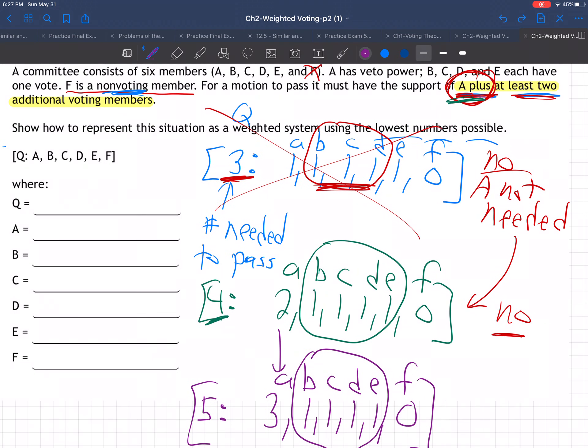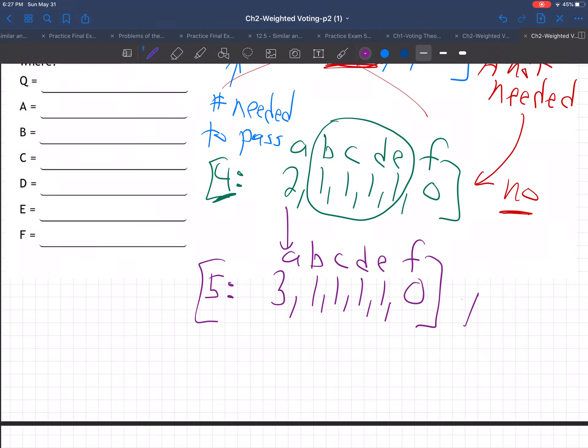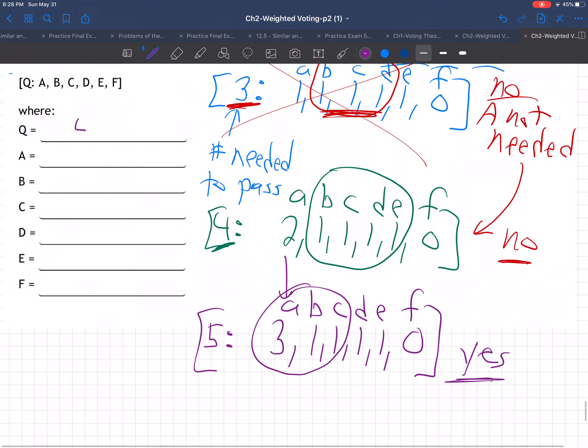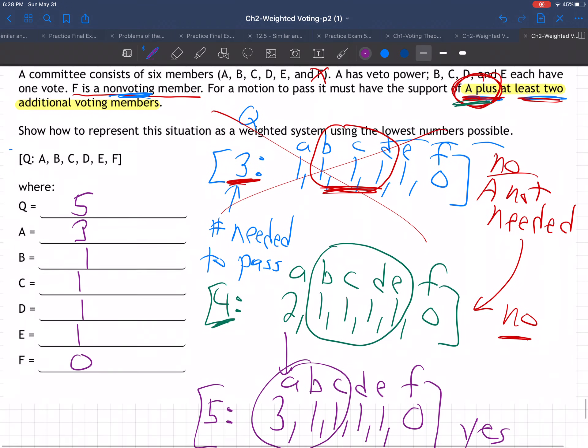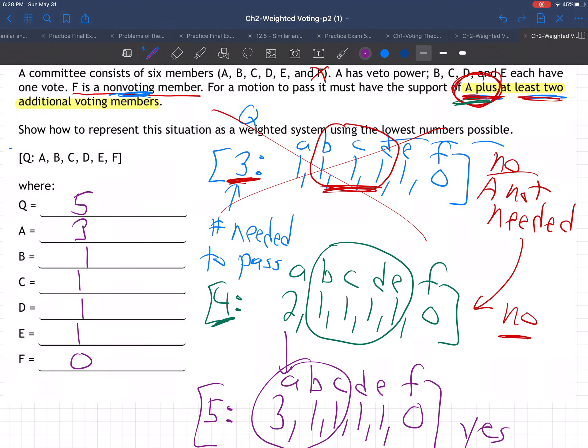Here, actually, let me get rid of that. So this one is a yes. They've got to have A and two others. So then there's the numbers. Quota's got to be five. A's got to have three votes. 1, 1, 1, 1, and zero votes. That's the number situation that will fit these words, the rules in these words. That's a number scenario that fits.